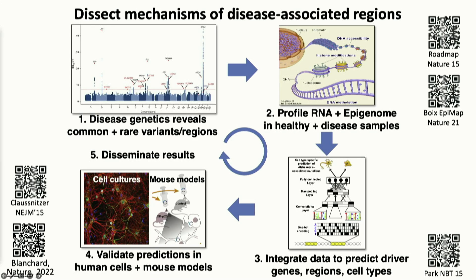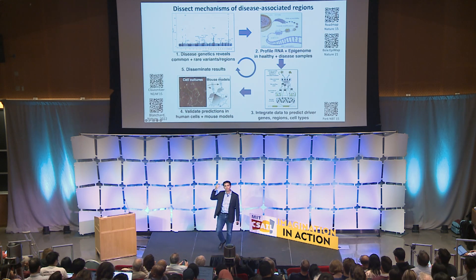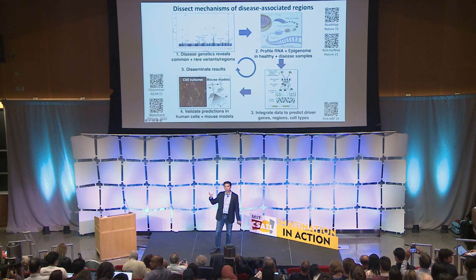The way that we do that is by systematically starting from genetics and then profiling the molecular impact of those genetic differences at the cellular level — to understand, for example, for patients that show Alzheimer's, how is APOE4 impacting the brain? Not just the brain as a whole, but every single cell type of the brain. We need to understand the molecular impact of every one of those genetic variants at single-cell resolution in every tissue and every cell type of the body.